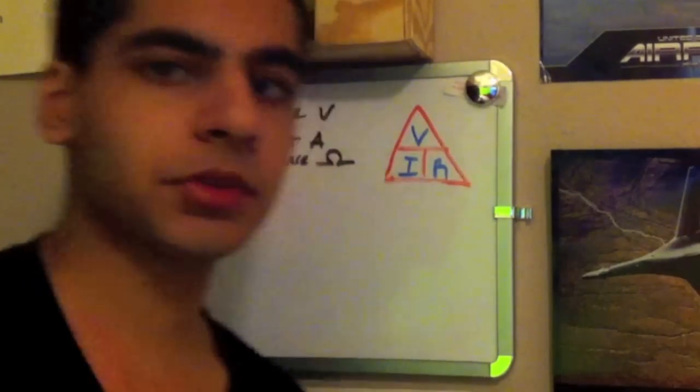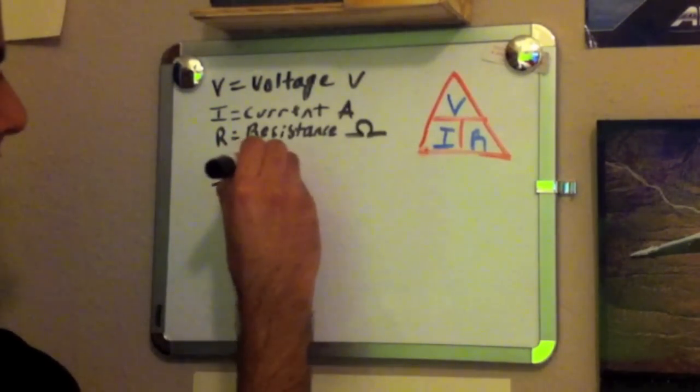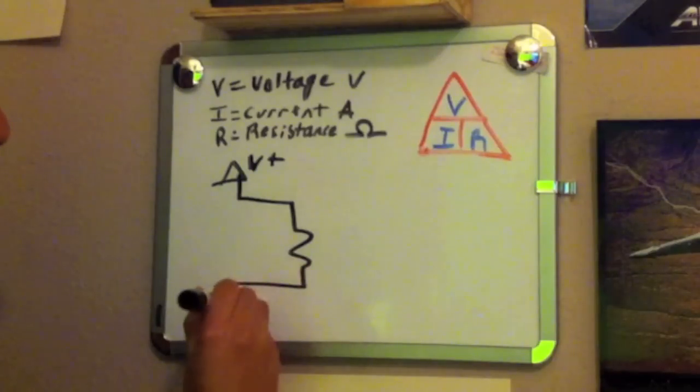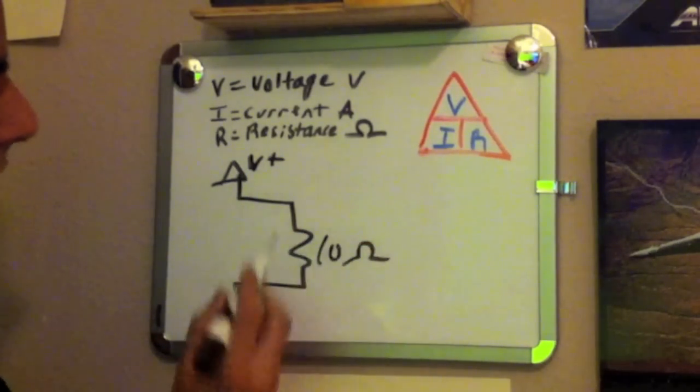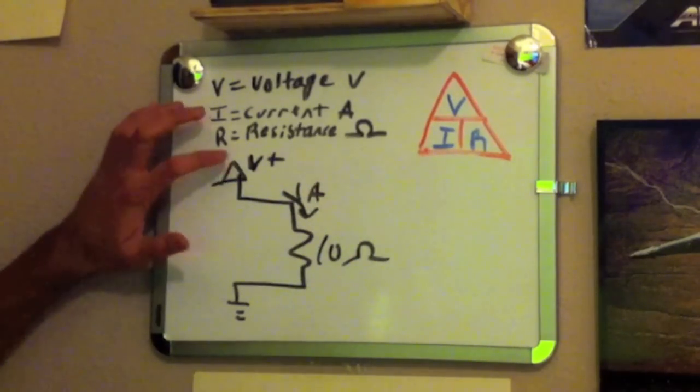So, working on that same circuit again, where we had a source voltage, positive voltage coming in, we had a resistor, and we had ground, and this resistor was again 10 ohms. We knew the current to be 1 amp, but we wanted to know the voltage.